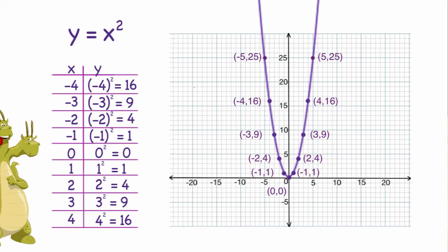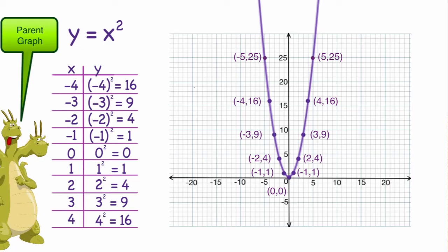Y equals x squared happens to be what's called the parent graph. It's like the first quadratic or the simplest quadratic equation that you can graph. And we're going to, in the next problem, look at different types of parabolas and what their formulas look like.